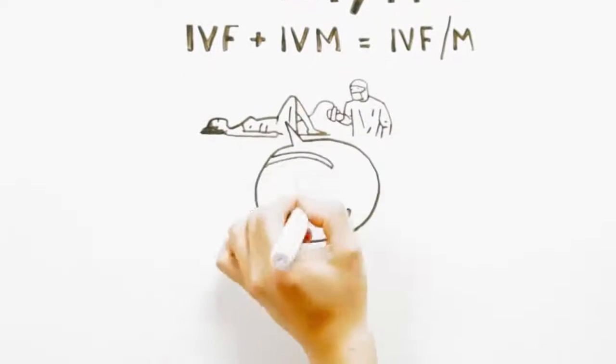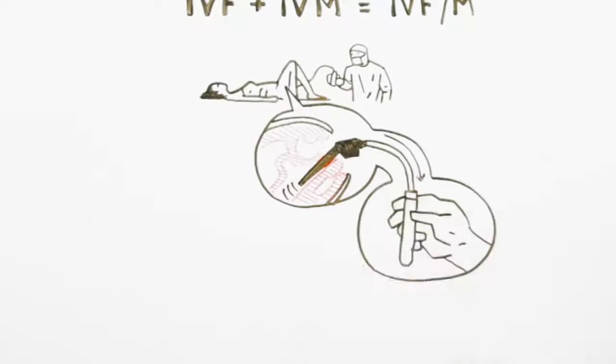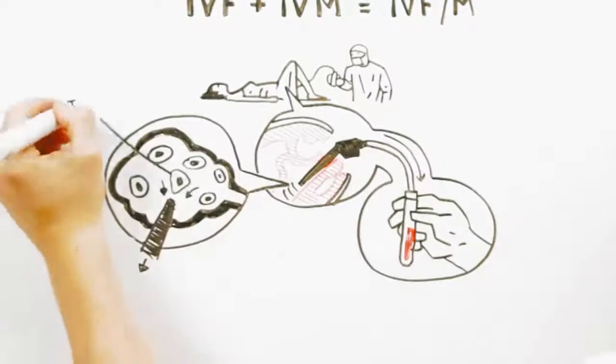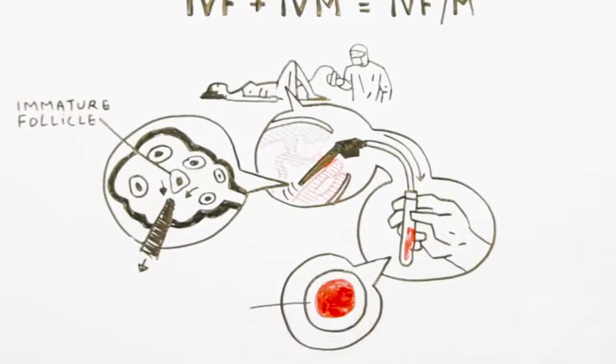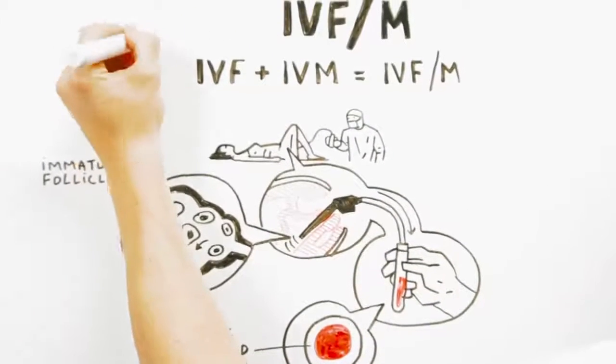we would aim to collect one mature egg from the dominant follicle, together with several immature eggs from small follicles, which result in several viable embryos. So, the chance of achieving a pregnancy would actually be greatly increased. This could be an exciting and new alternative for infertility treatment.